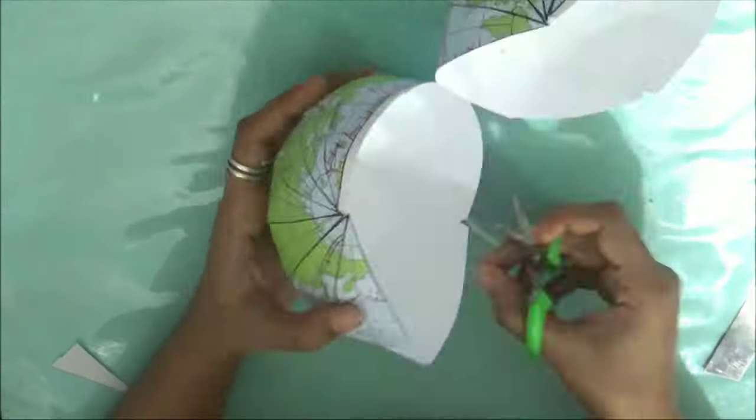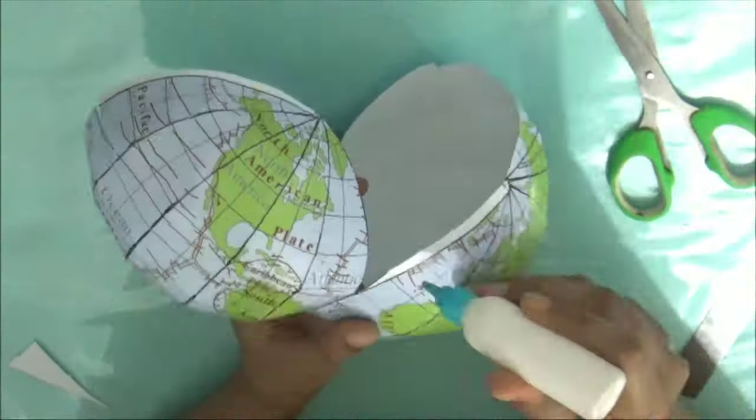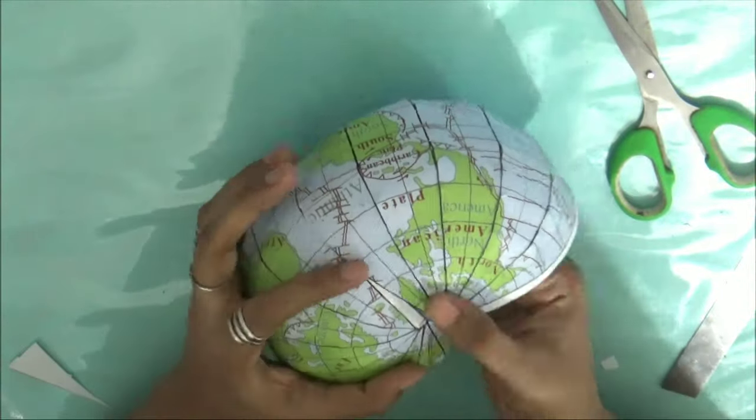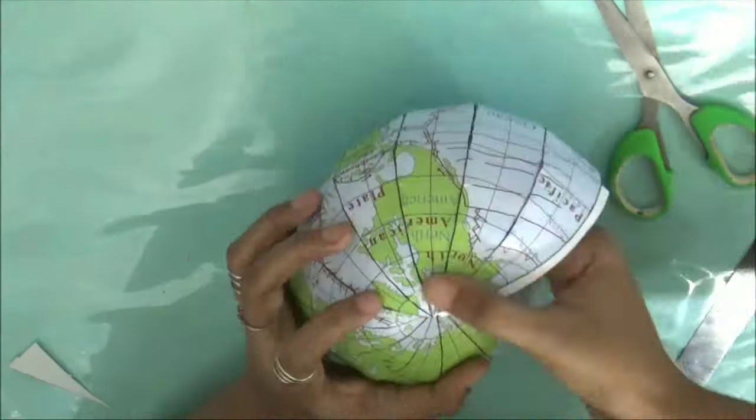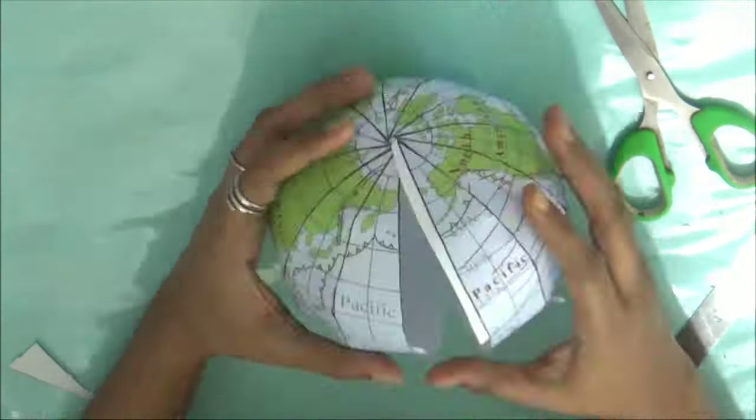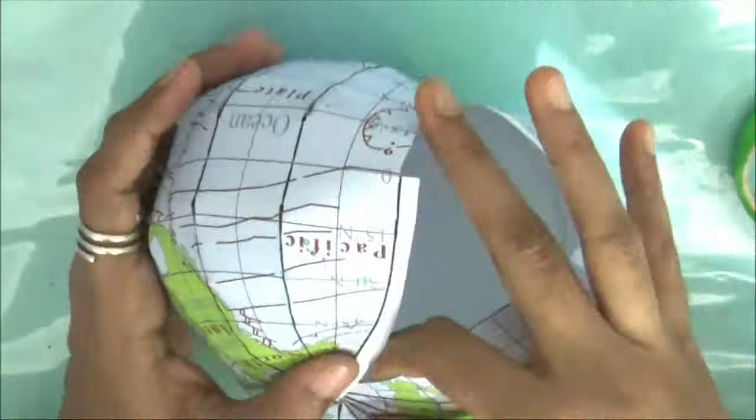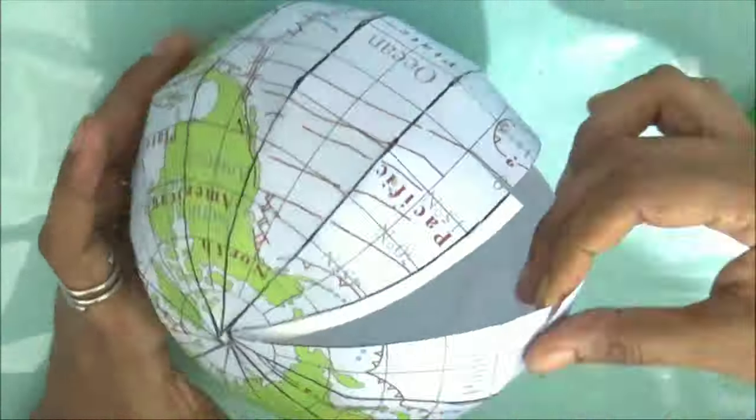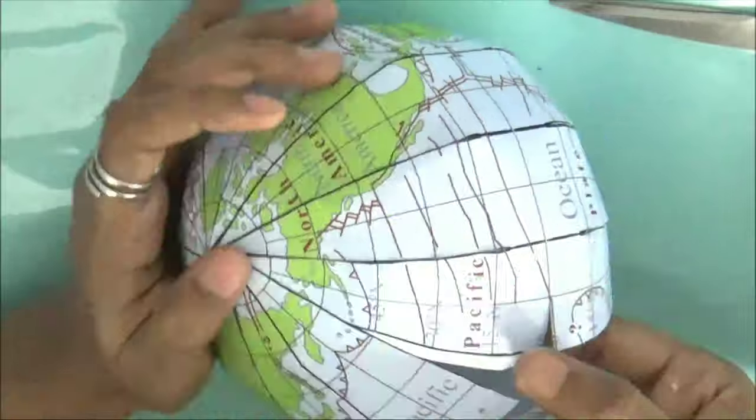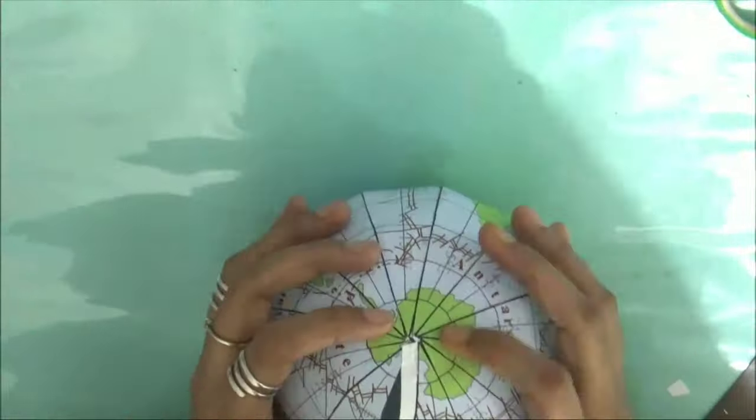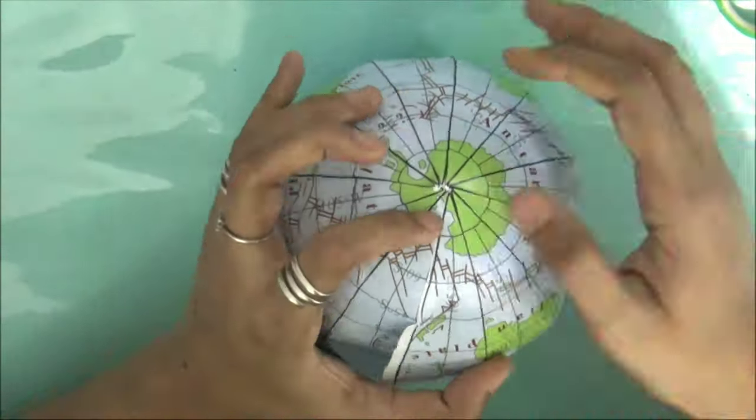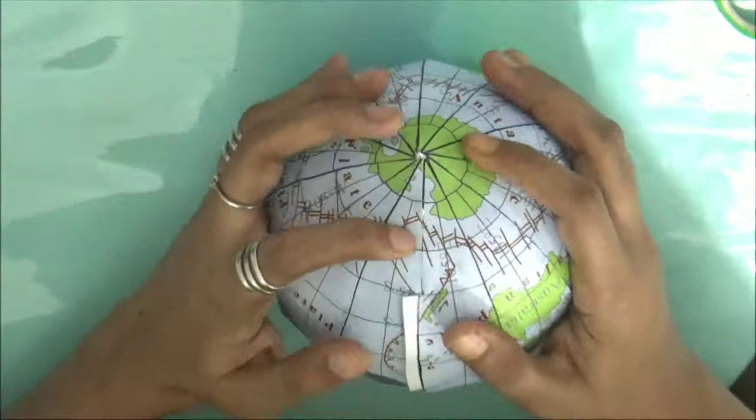Joining both the parts of the globe is a little bit tricky, so here in this portion we have to be a little bit patient and more careful. If some of the parts are not sticking well or not able to join, we can do a small cut as you guys can see.